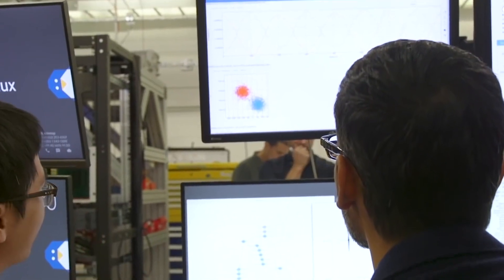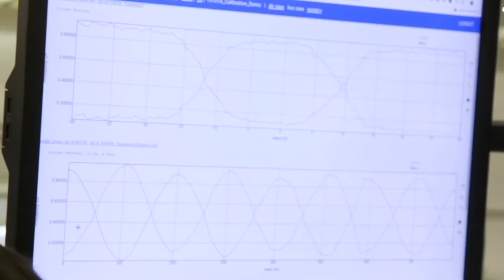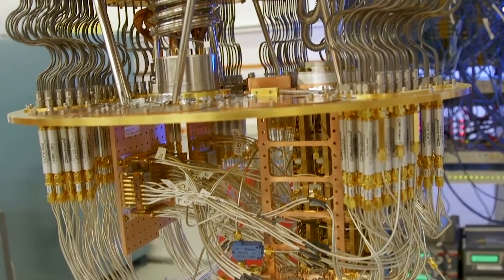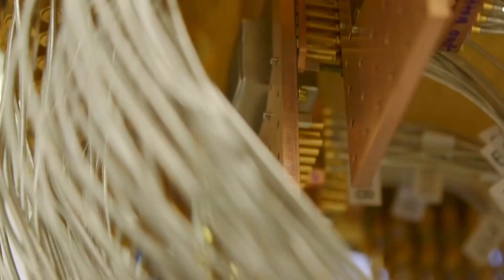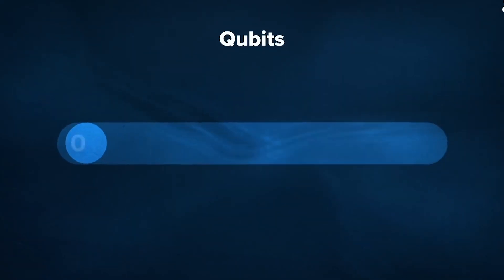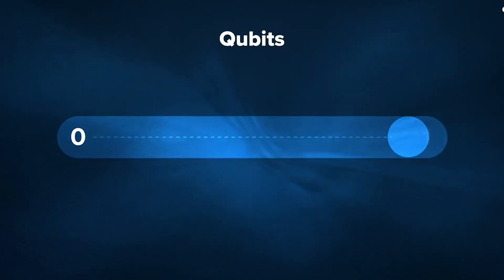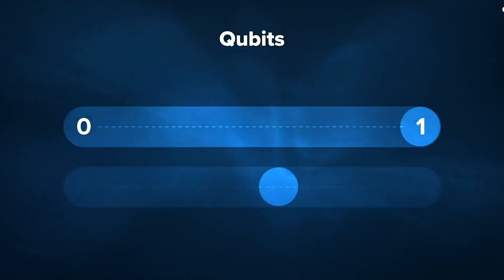While small-scale quantum computers are operational today, a major hurdle to scaling up the technology is the issue of dealing with errors. Compared to bits, qubits are incredibly fragile.